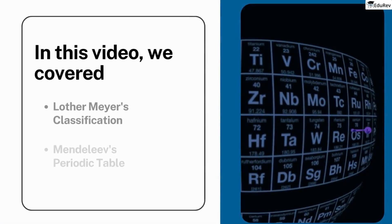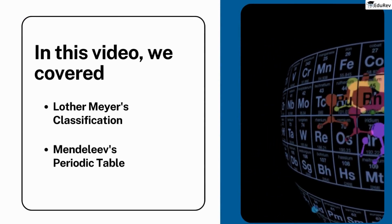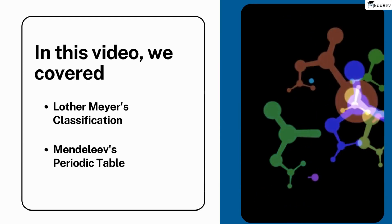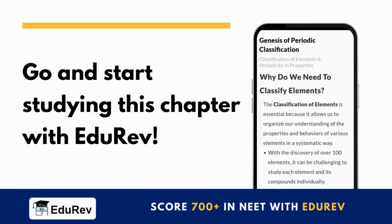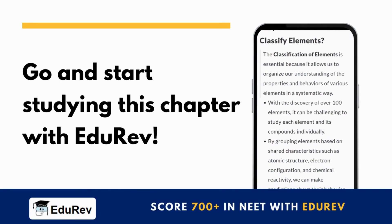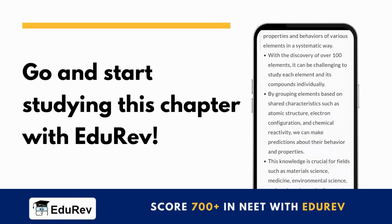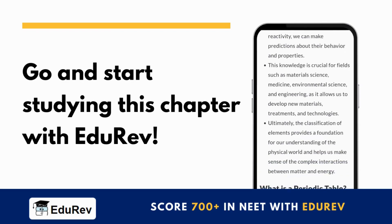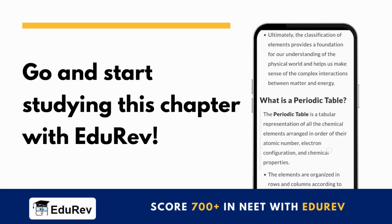We have discussed the details, merits, demerits, and conclusion of these theories and ideas, which led to the evolution of the modern periodic table in this video. Hope you have understood the topic well. Now you should start studying the chapter with the Edurev app, where you get video lectures, notes, a variety of questions, and MCQ tests for all the chapters of each subject — it's like having the entire school in your pocket.